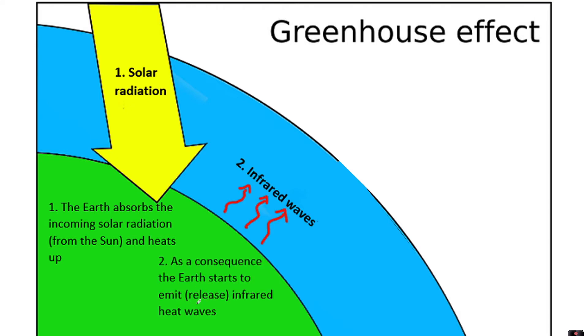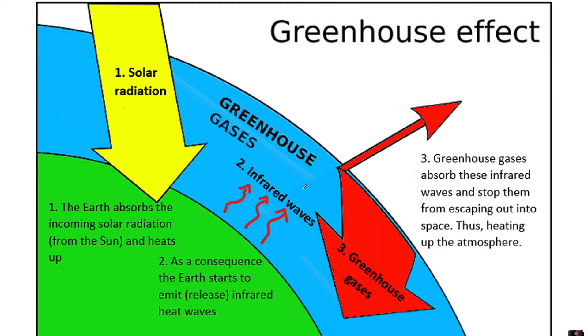As a consequence, the Earth starts to emit—which means release—infrared heat waves back into the atmosphere. These infrared waves are longer wave radiation. Within the atmosphere, there are greenhouse gases including carbon dioxide, methane, and to a smaller extent water vapor. Greenhouse gases absorb these infrared waves and stop them escaping out to space, thus heating up the atmosphere.